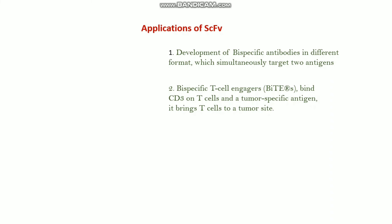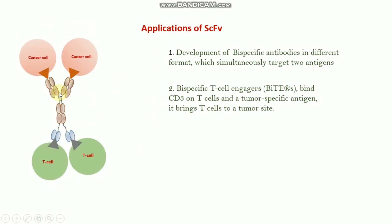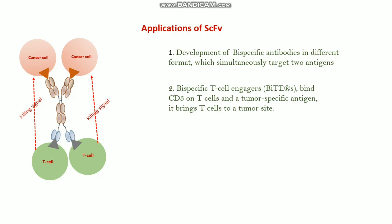It brings T-cells to a tumor site. This bispecific antibody, when it binds with the cancer cell via one antigen-specific arm, and by another arm it also binds with the T-cell — because this is the PD-1 sequence or CD3 sequence — this is how the T-cell and cancer cell both bind together by this kind of antibody. Then the T-cell can easily recognize this cancer cell, and the killing signal is produced by the T-cell. This is basically the cytotoxic T-cell, and it can kill cancer cells by this way. This is called T-cell mediated cytotoxicity of cancer cells. This is a very wide application of ScFb.